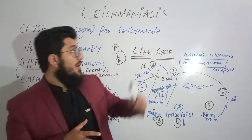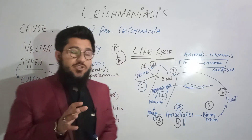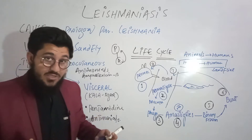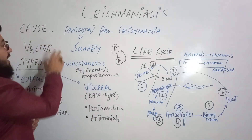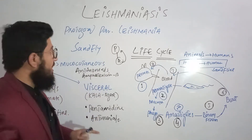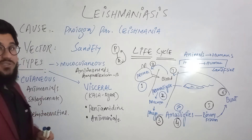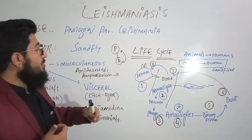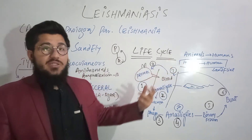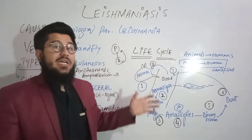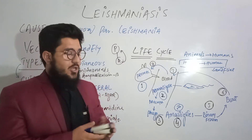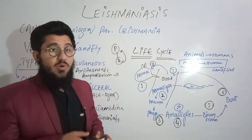The topic under discussion is Leishmaniasis, and it will be discussed in a very simple way. First, we'll cover what Leishmaniasis is, then its cause, then the term 'vector' and the vector of Leishmaniasis, then the types of Leishmaniasis seen in humans, then the life cycle of the parasite, and finally the drugs used to treat Leishmaniasis — anti-leishmanials — in a simple and easy way.